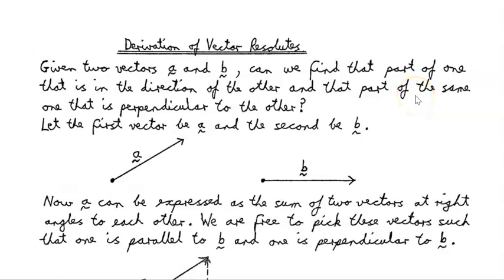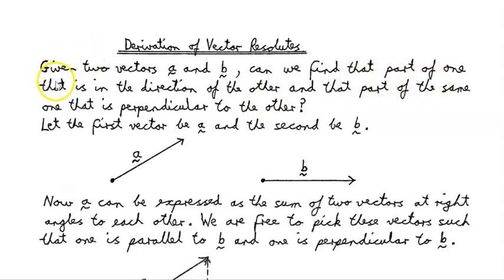In this video we're going to look at the idea of vector resolutes, or vector projection. The idea is that we are going to project one vector on another. Given two vectors A and B, can we find the part of one that is in the direction of the other, and the part of the same one that is perpendicular to the other?